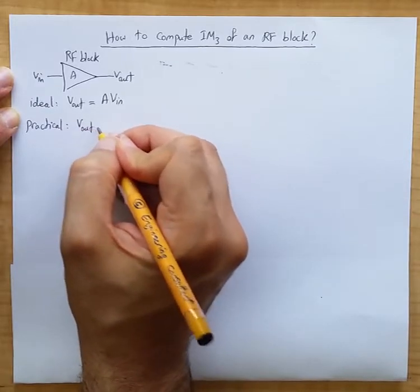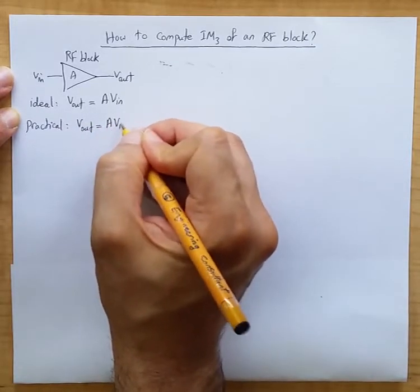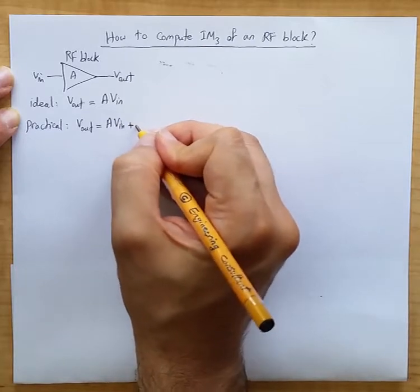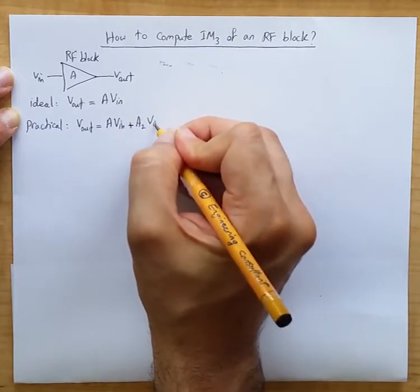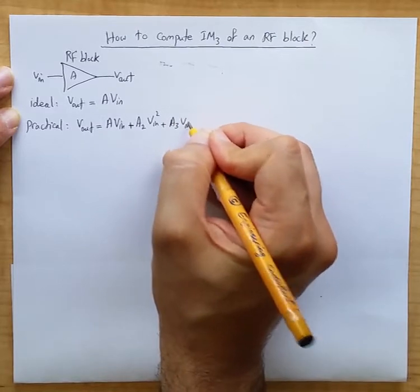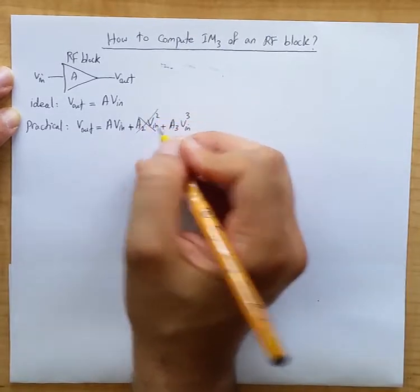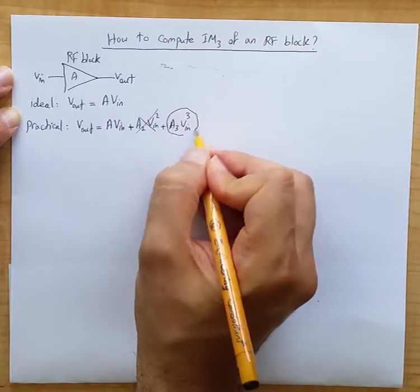you get V out that is A times VN plus A2 V in squared plus A3 V in cubed and so on. Let's forget about this guy for now. You're focusing on this component.